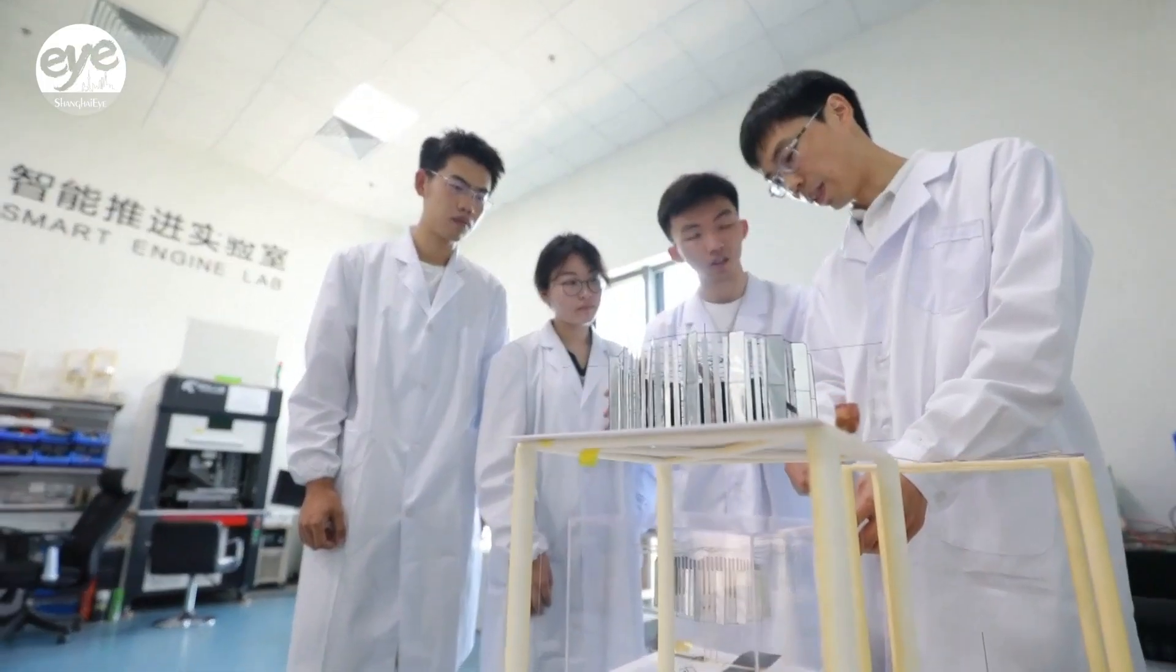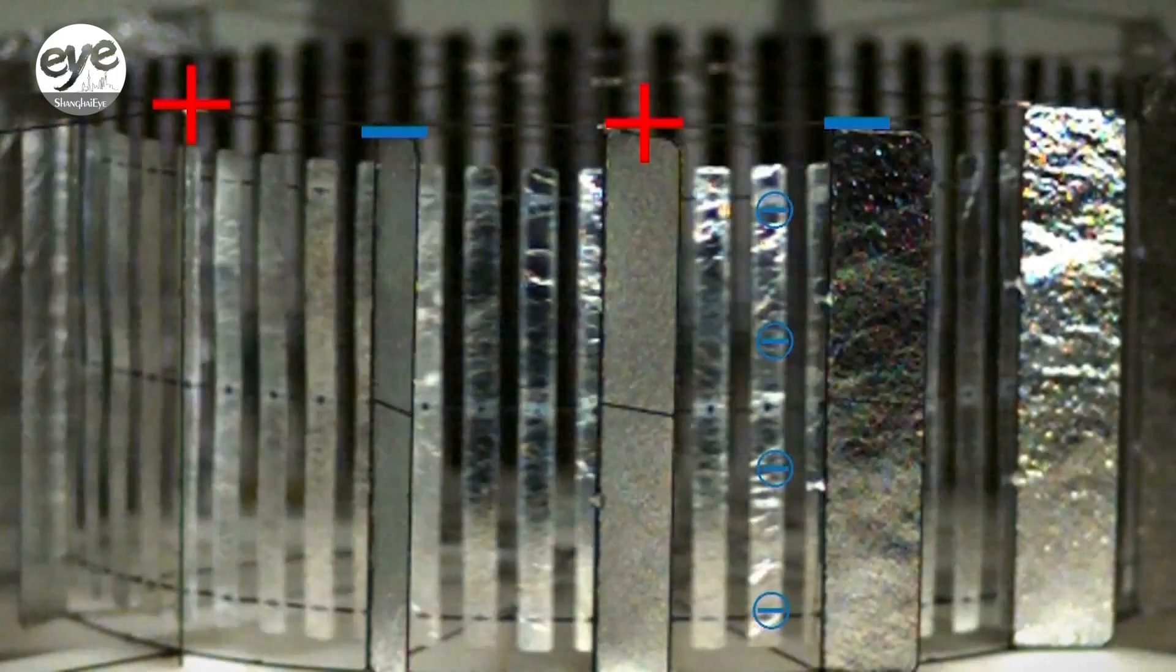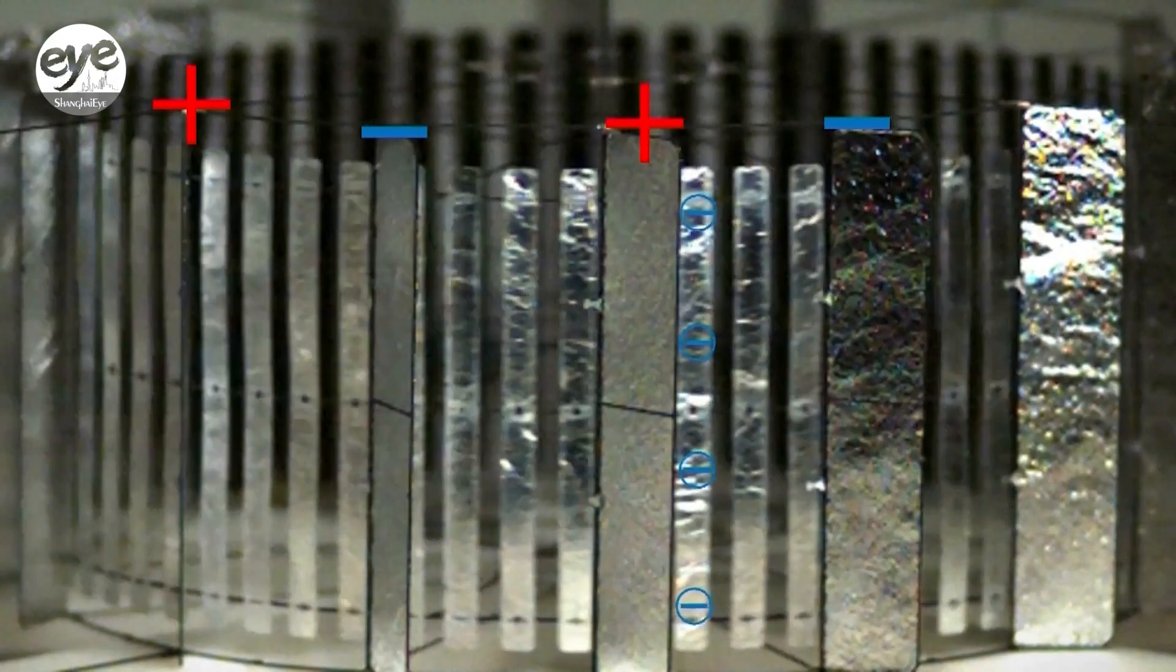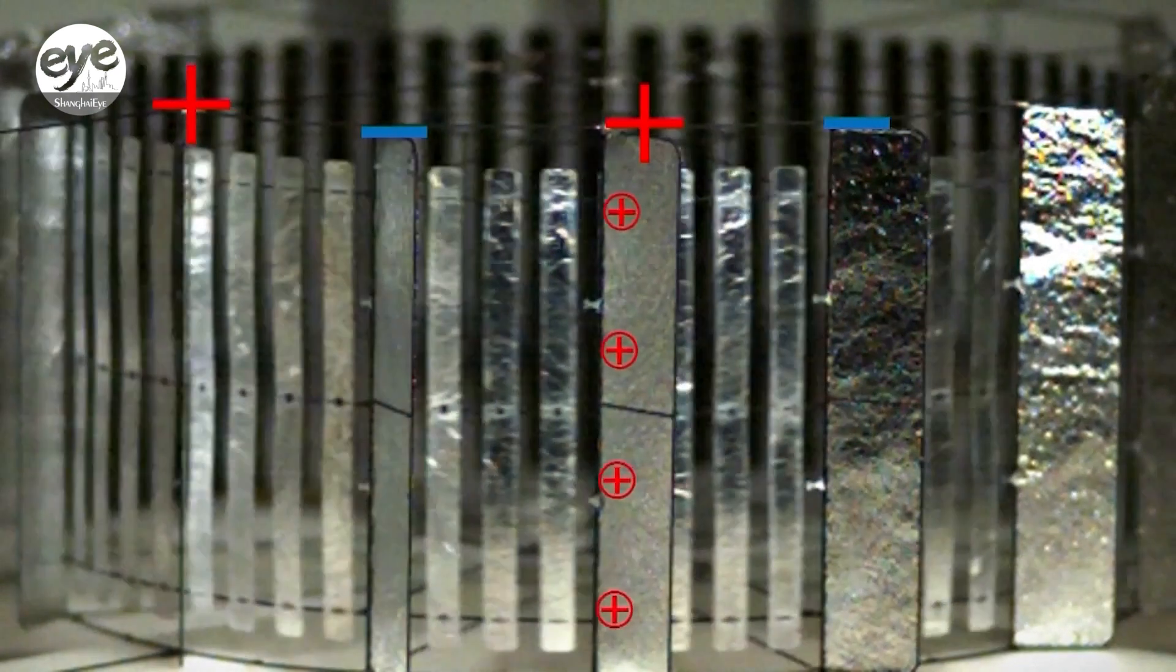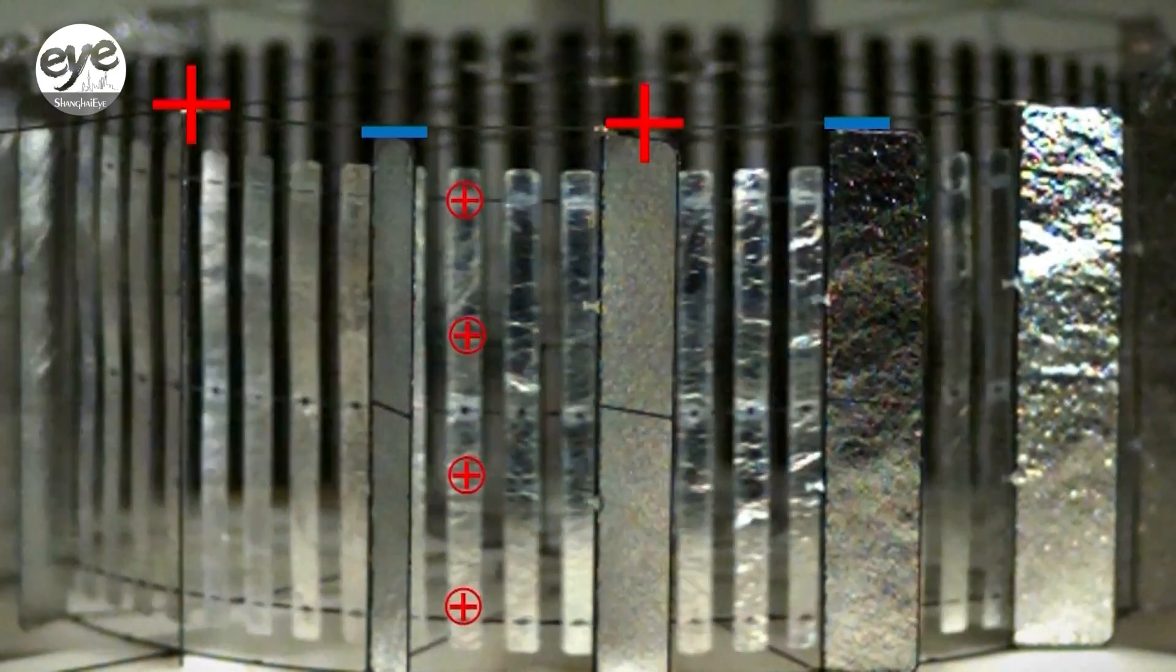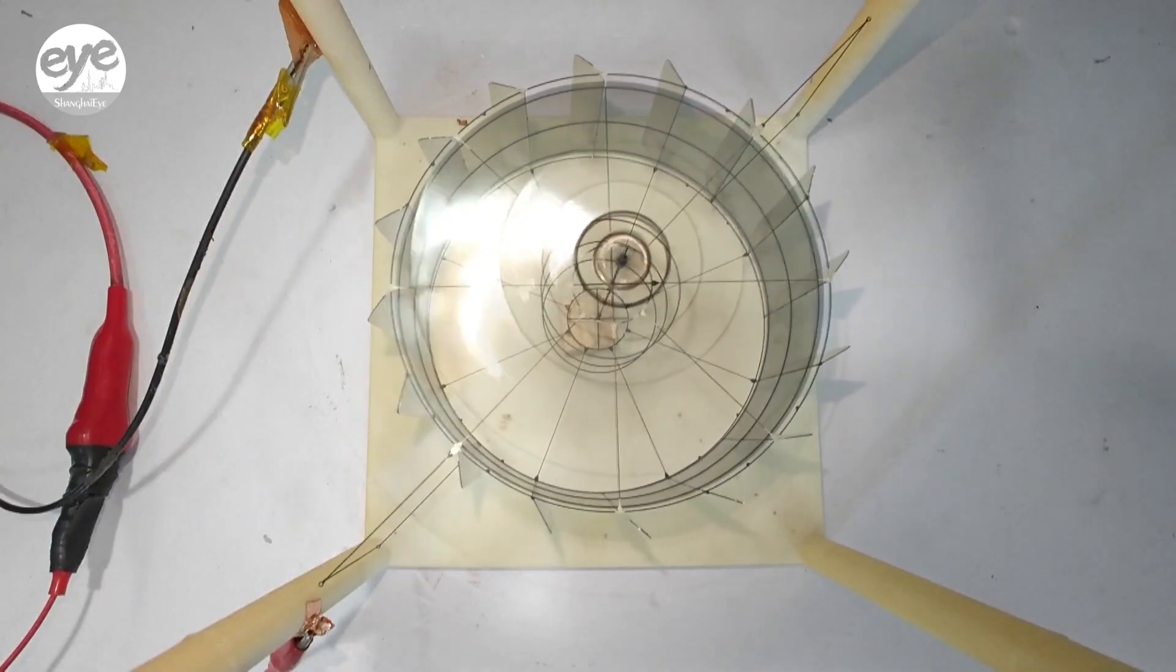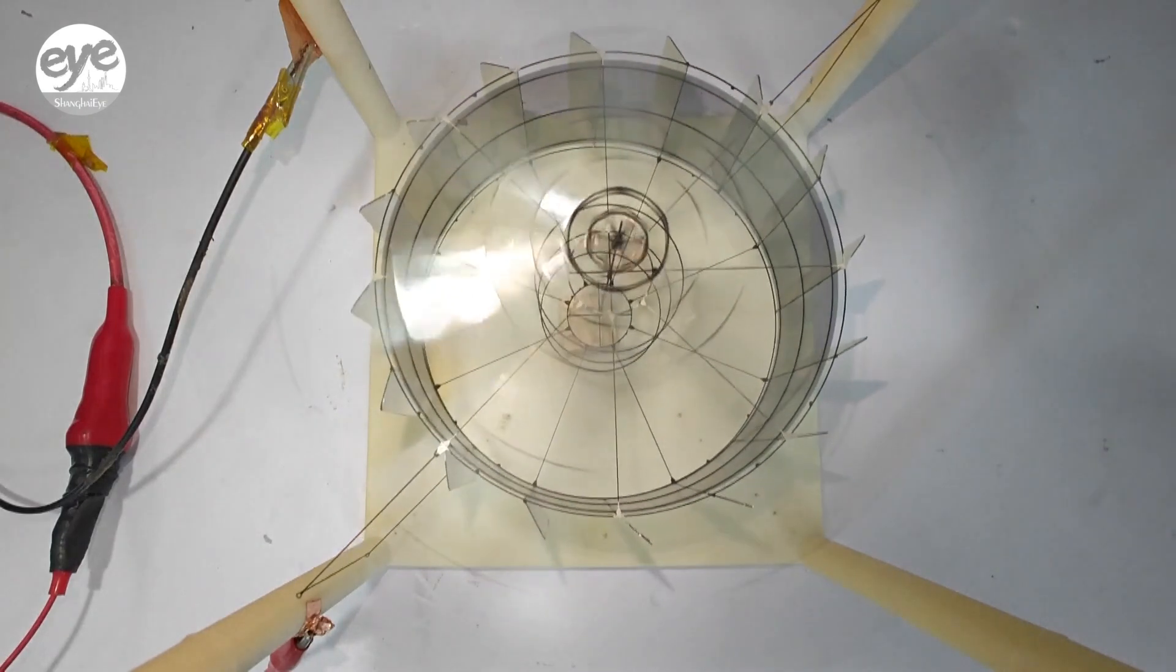One researcher explains how it works. Electrostatic motors are shaped like lanterns with a ring of electrode blades around them. These blades follow the principle that like charges repel each other and opposite charges attract each other. The adjacent blades have opposite charges, so the moving electrode blade is repelled by the blade on its right side and attracted by the blade on its left side.